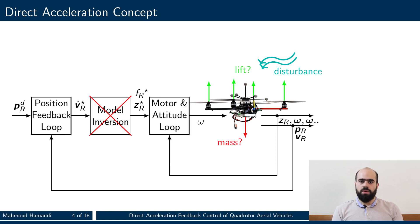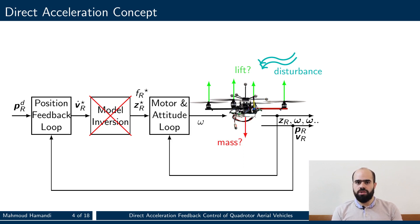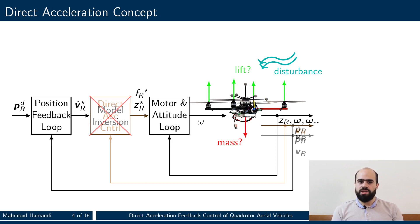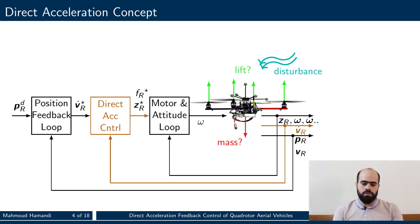The problem with this controller is when the mass or lift change from the nominal values, or if the platform is subjected to external disturbances. In this case, the nominal model is no longer valid. As such, we suggest to remove completely the model inversion and close the loop on the platform acceleration control.